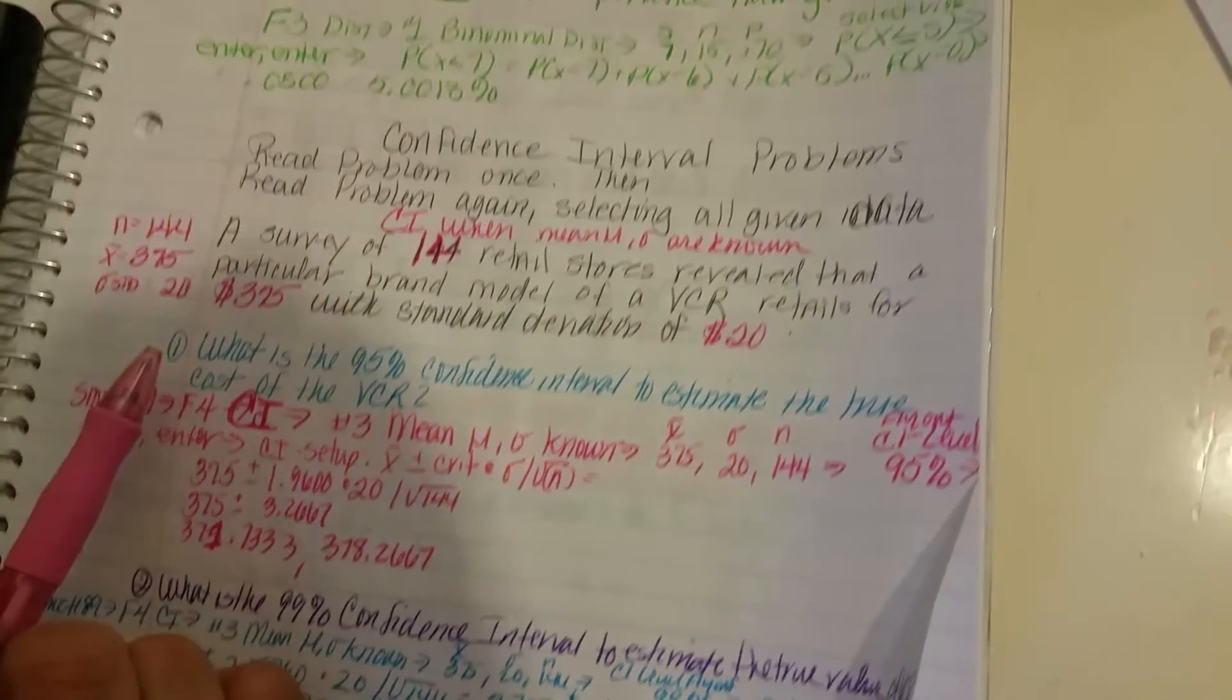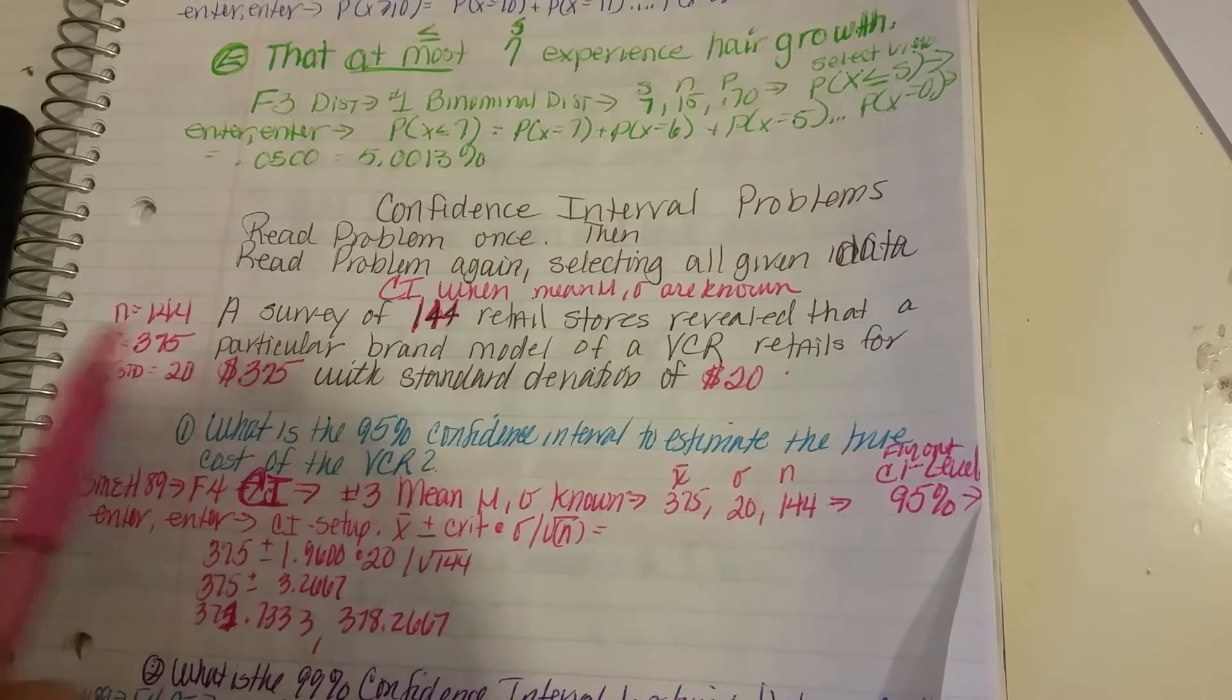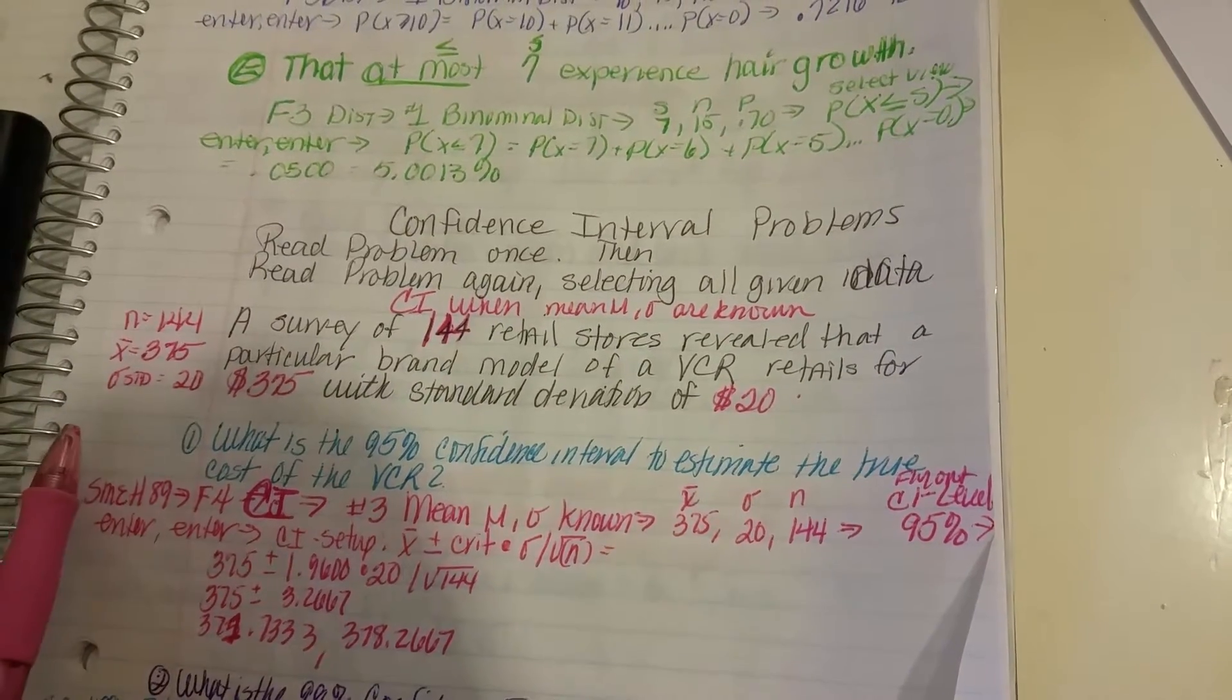Now we're going to go F4 and read the problem again. It says a survey of 144. That's the number. So you put your 144, the N equals 144.